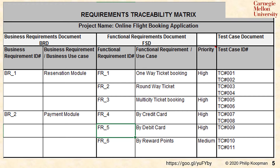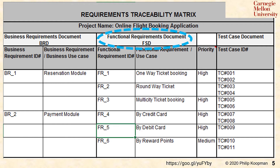An important thing to do when trying to do traceability is to put identifying numbers on things to make it easier to build traceability tables. Here's an example requirements traceability matrix for a flight booking application. There are four main columns: a business requirements document column with numbered IDs and nicknames, a functional requirements document column with numbered functional requirements and nicknames, a priority column (low, medium, high), and a test case document column with test case numbers. This document shows traceability from business requirements through functional requirements to the test case ID.